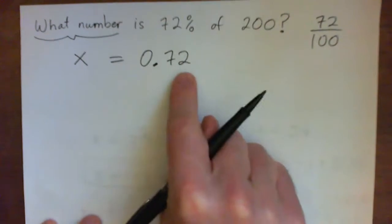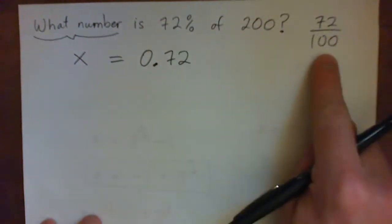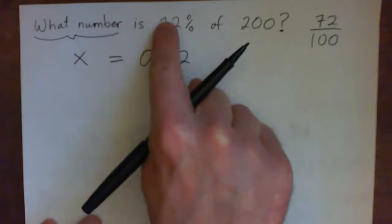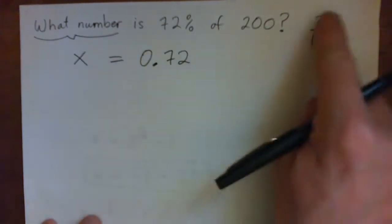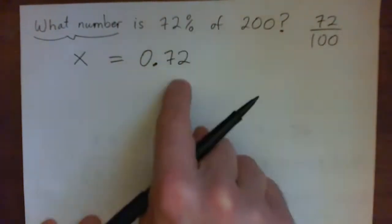That's 72 hundredths, or 72 cents. 72 cents of a dollar, 0.72. 72%, 0.72, 72 hundredths. Three ways of writing the same thing, okay?